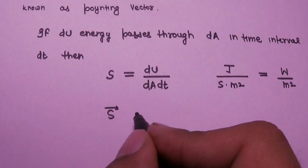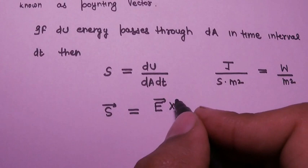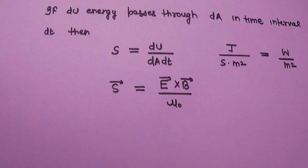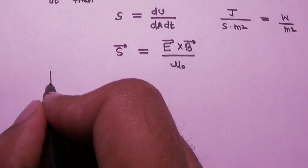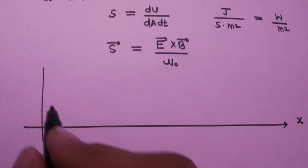The Poynting vector is generally represented as S vector equals E vector cross B vector upon μ₀. We can derive this expression for the Poynting vector from its basic definition. Consider a Cartesian coordinate system.